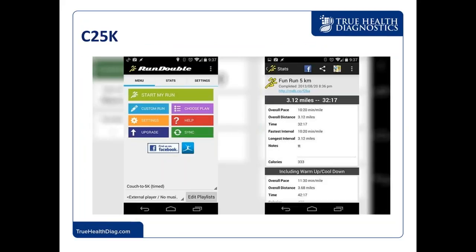Another app is C25K, which stands for Couch to 5K. A 5K is a 3.2-mile run. It starts you from doing nothing on the couch and takes you all the way to running the full 5K. It beeps to tell you to start walking, then beeps again to start jogging. Those intervals get longer and longer as you progress through the program. I used this with a friend and we were up to 5 miles before we knew it.